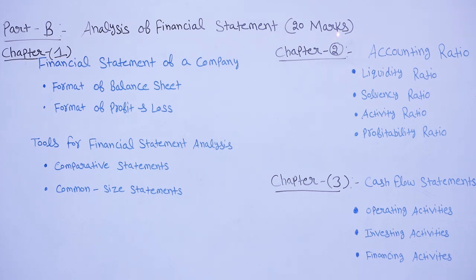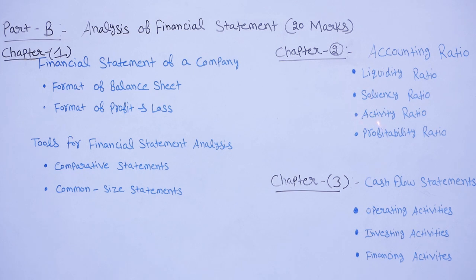Part B is analysis of financial statements — its weightage is 20 marks. There are three chapters. Chapter 1 covers the format of balance sheet, format of profit and loss of a company, and tools for financial statement analysis through comparative statements and common-size statements. Chapter 2 is accounting ratios. There are four accounting ratios in the syllabus: liquidity ratio, solvency ratio, activity ratio, and profitability ratio.